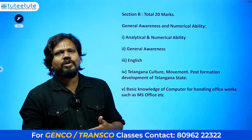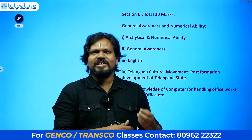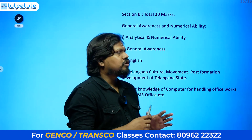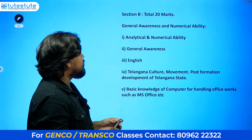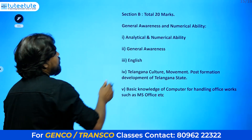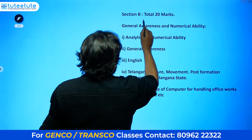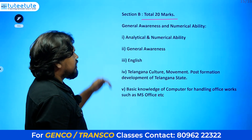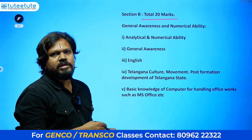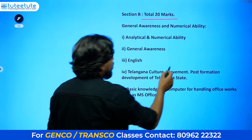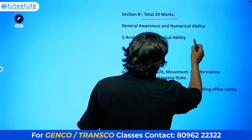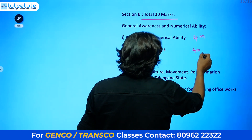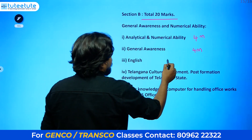Don't try to get 20 out of 20, because you will waste most of the time. You need to study a limited syllabus for this. In these 20 marks, there are 5 topics total, and each topic will have 4 marks — meaning 4 questions each.